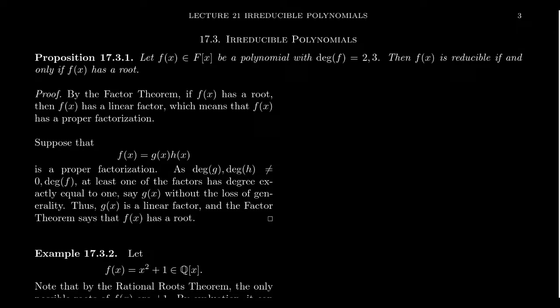A very useful strategy for finding irreducible polynomials is the following, when your polynomial has degree 2 or 3. If your polynomial has degree 1, then it's a linear polynomial—all linear polynomials over a field are irreducible. But if it's quadratic or cubic, the following strategy can work: you have some polynomial f of X of degree 2 or degree 3, and f is reducible if and only if it has a root.